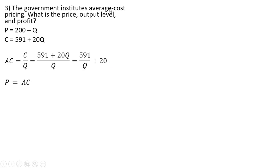Next we'll set price equal to average cost. That's what average cost pricing is - it guarantees the firm a normal rate of return, economic profit of zero. So price is 200 minus Q, and we set that equal to average cost.